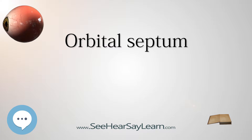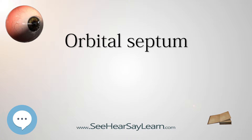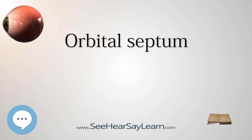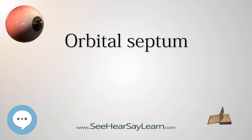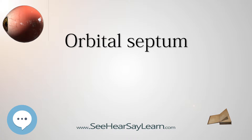In the upper eyelid, the orbital septum blends with the tendon of the levator palpebrae superioris, and in the lower eyelid with the tarsal plate. When the eyes are closed, the whole orbital opening is covered by the septum and tarsae.